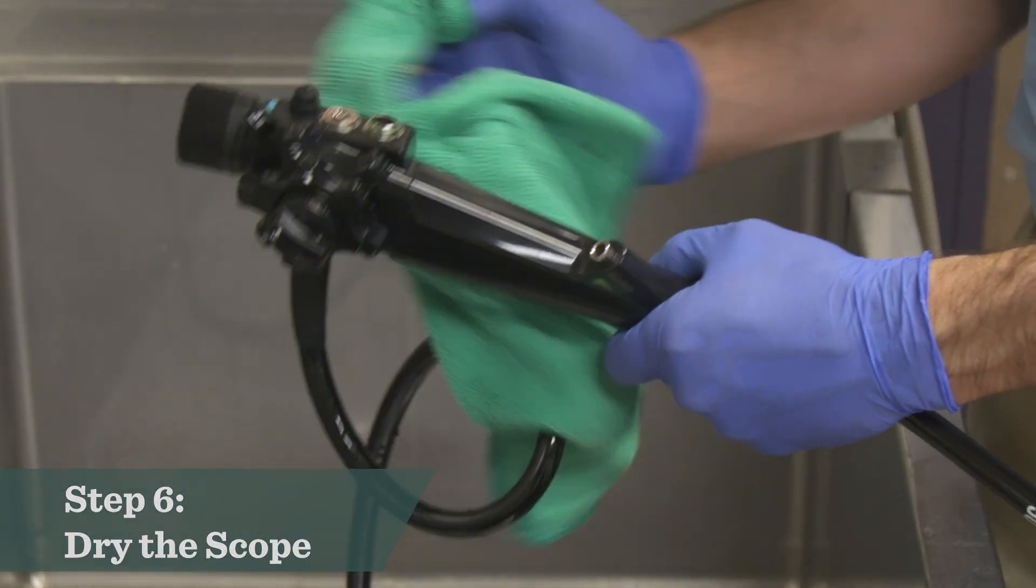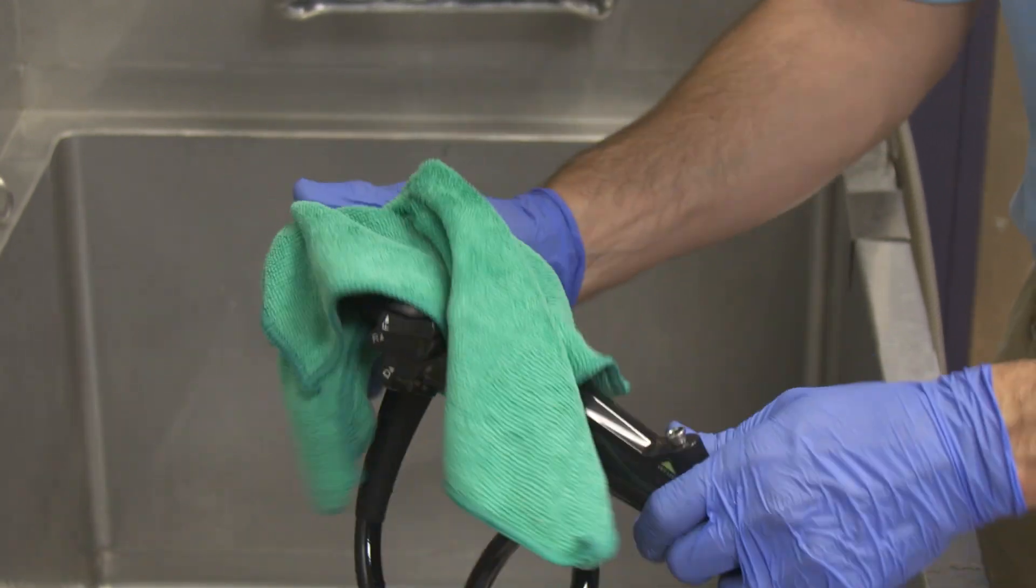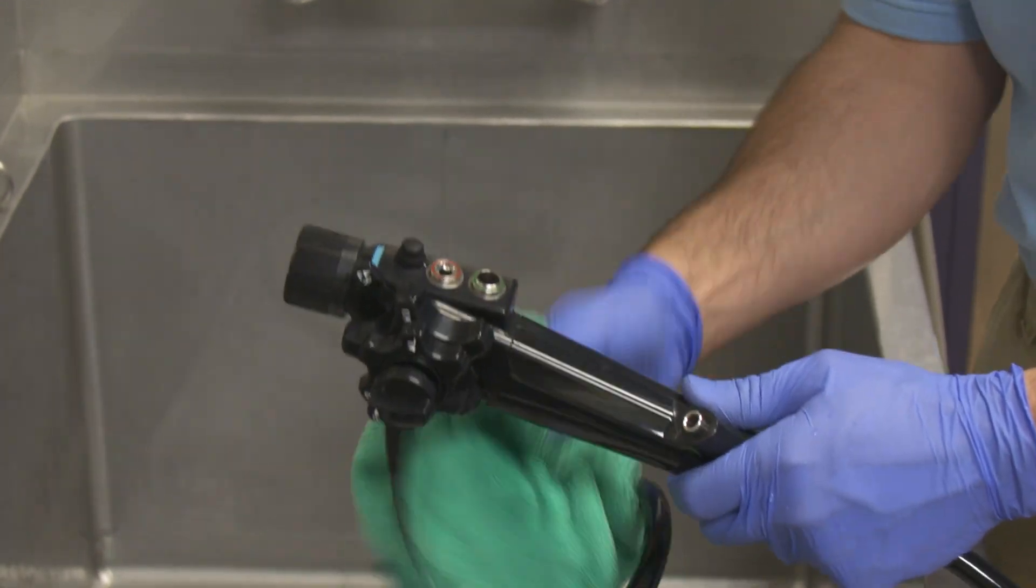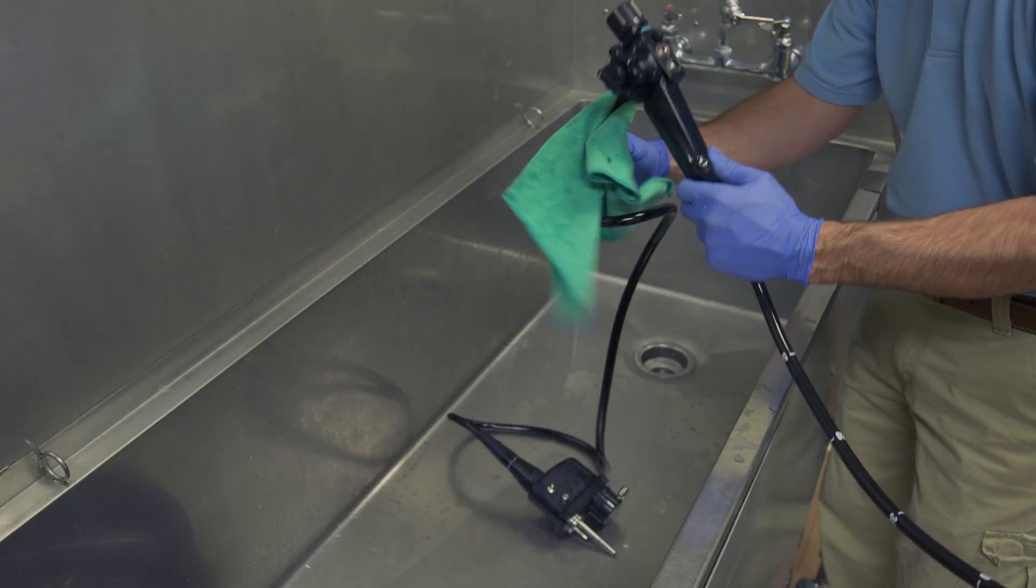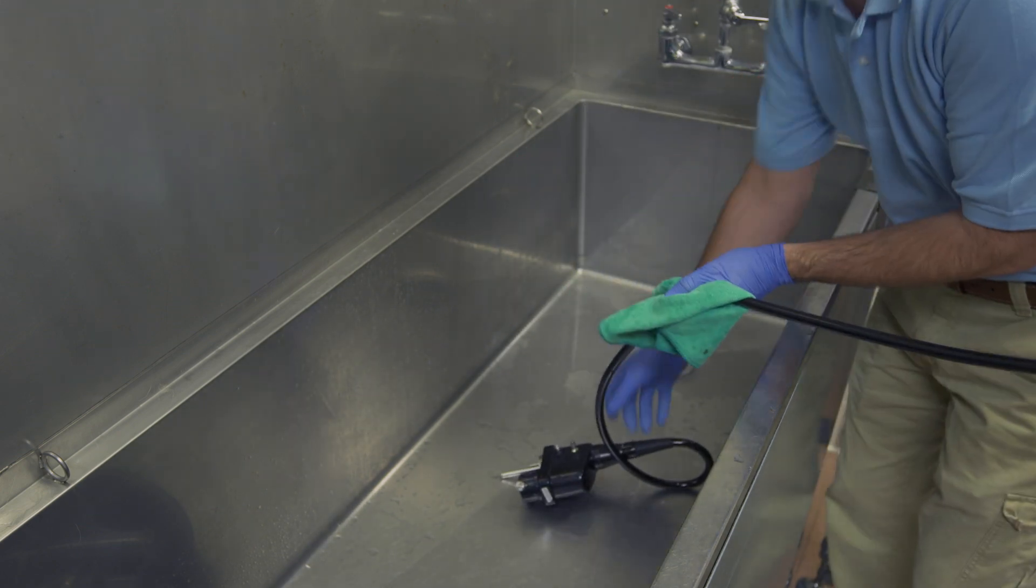Dry the outside of the endoscope using a soft cloth. With the air water and suction buttons removed, hang the scope in a fashion to allow any residual water in the suction biopsy channel and air water channels to drain out and evaporate.